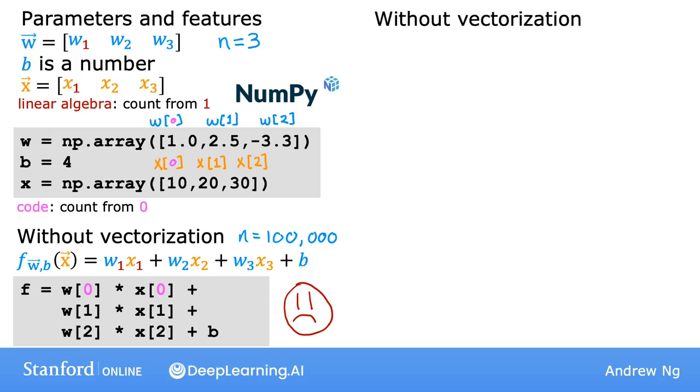So here's another way, still without using vectorization but using a for loop. In math you can use a summation operator to add all the products of wj and xj for j equals one through n, then outside the summation you add b.